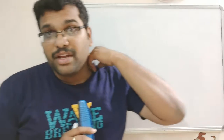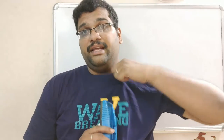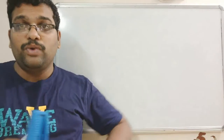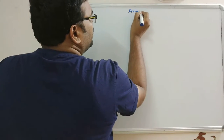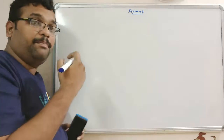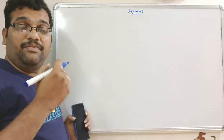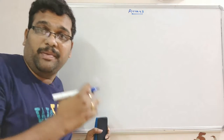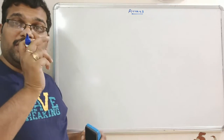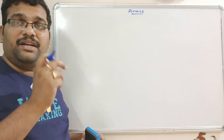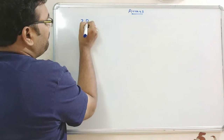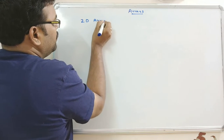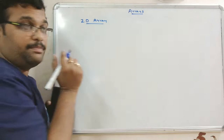Hello friends, welcome back to our channel. In the previous session we saw one-dimensional arrays. Now we will see two-dimensional arrays. Based upon the subscript we can identify whether it is a one-dimensional or two-dimensional array. In a 2D array there will be two subscripts.